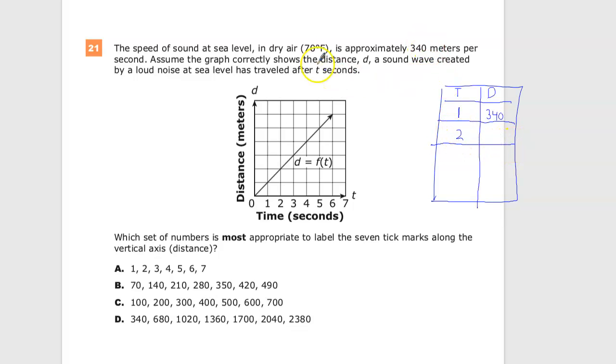For 2, essentially we'll end up with distance equals 340 times T, because for each one second it goes 340 meters. So at 2, you just do 340 more, and that's 680.